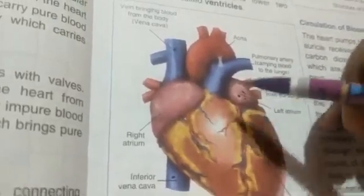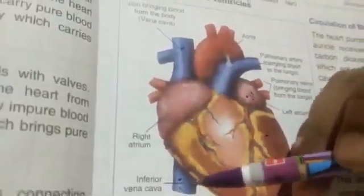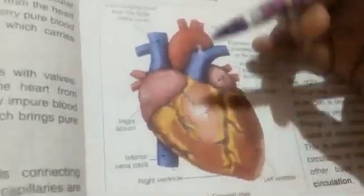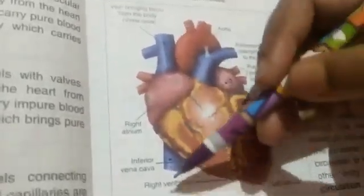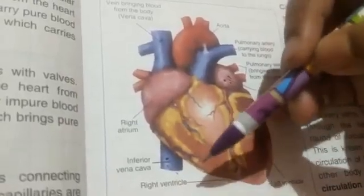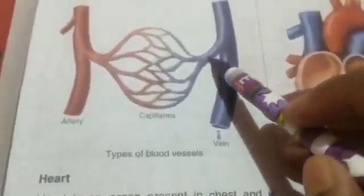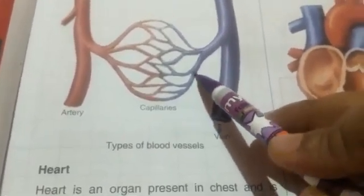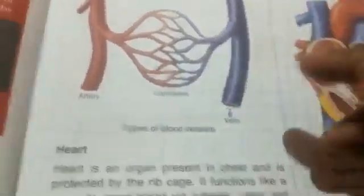All other veins, shown in blue, bring impure blood from the body — from head to toe, from each and every tissue. Veins branch into smaller veins, then into venules, and venules into capillaries.